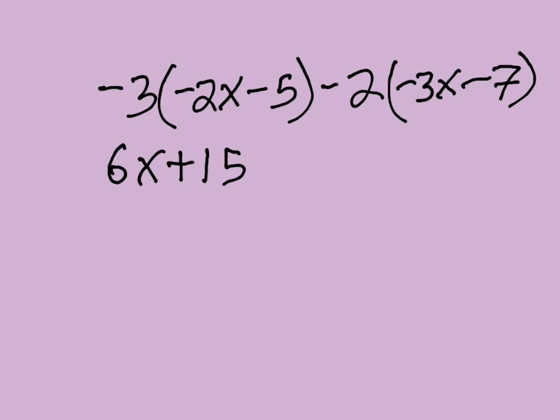Then next one, negative 2 times negative 3x is 6x again. And negative 2 times negative 7 is 14. And now we just combine like terms.